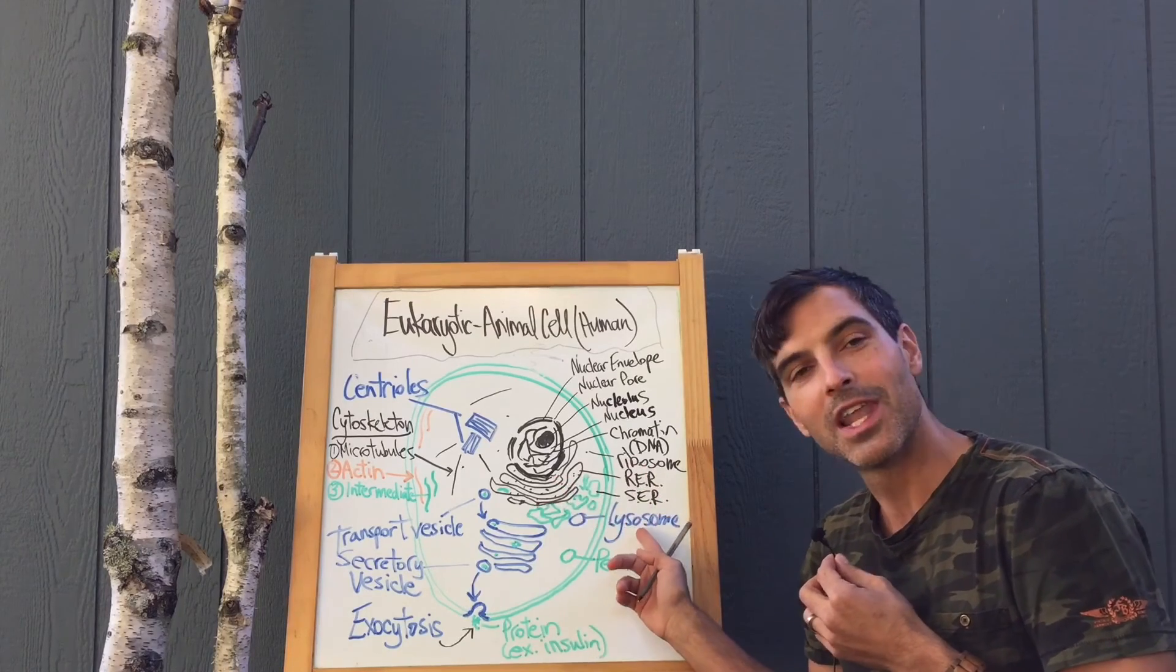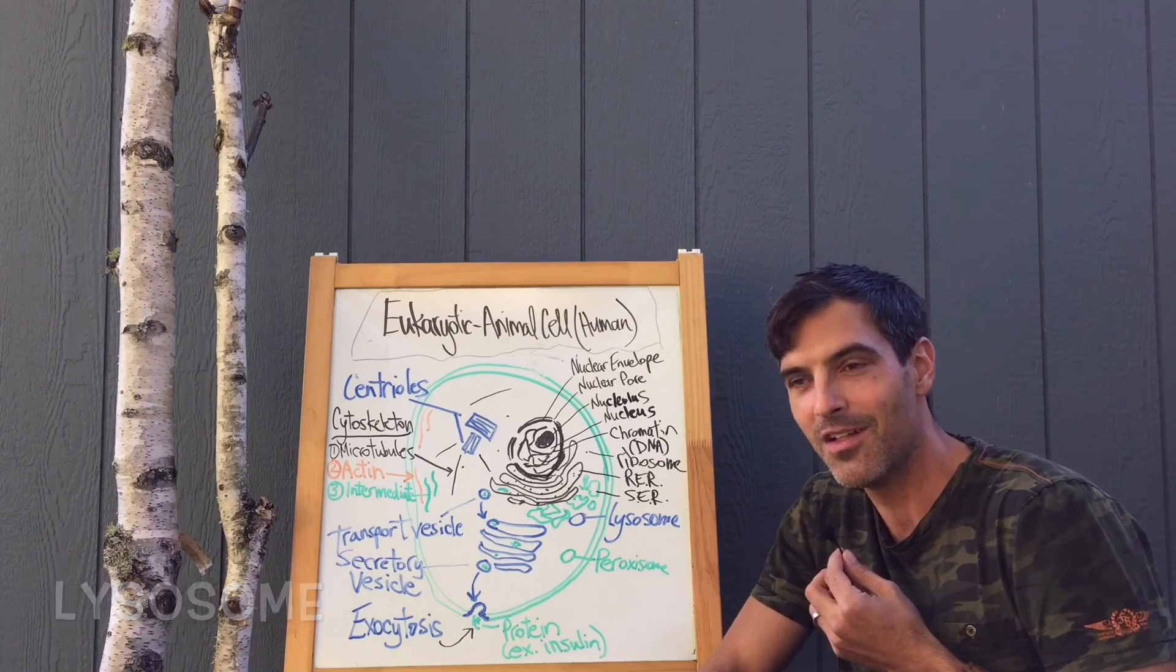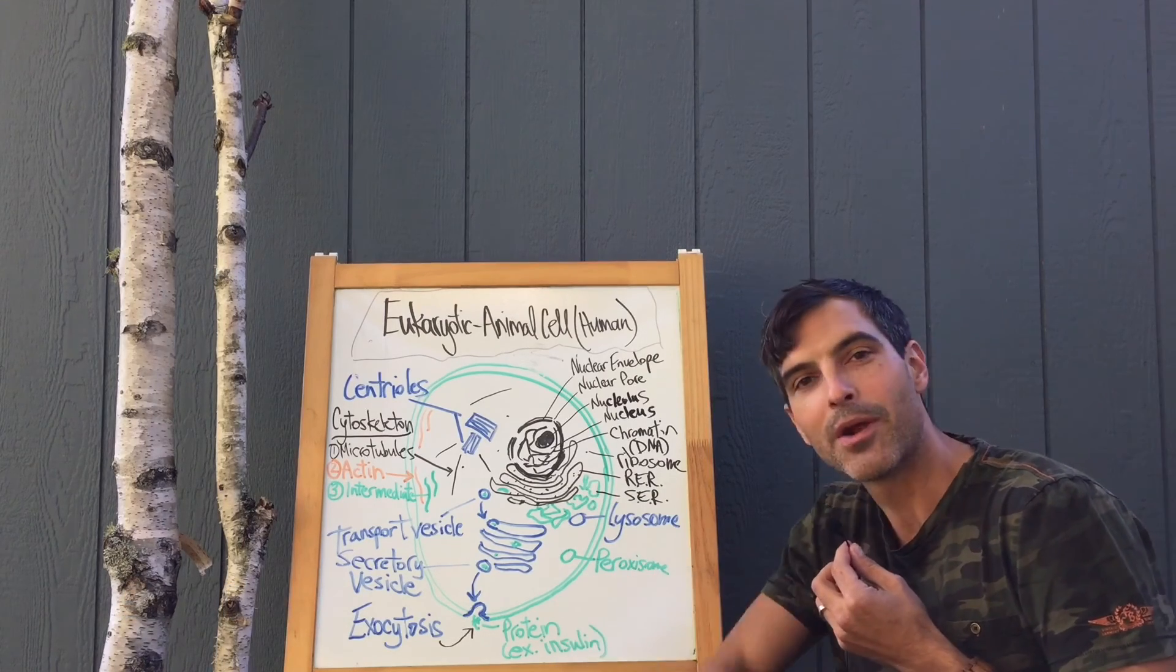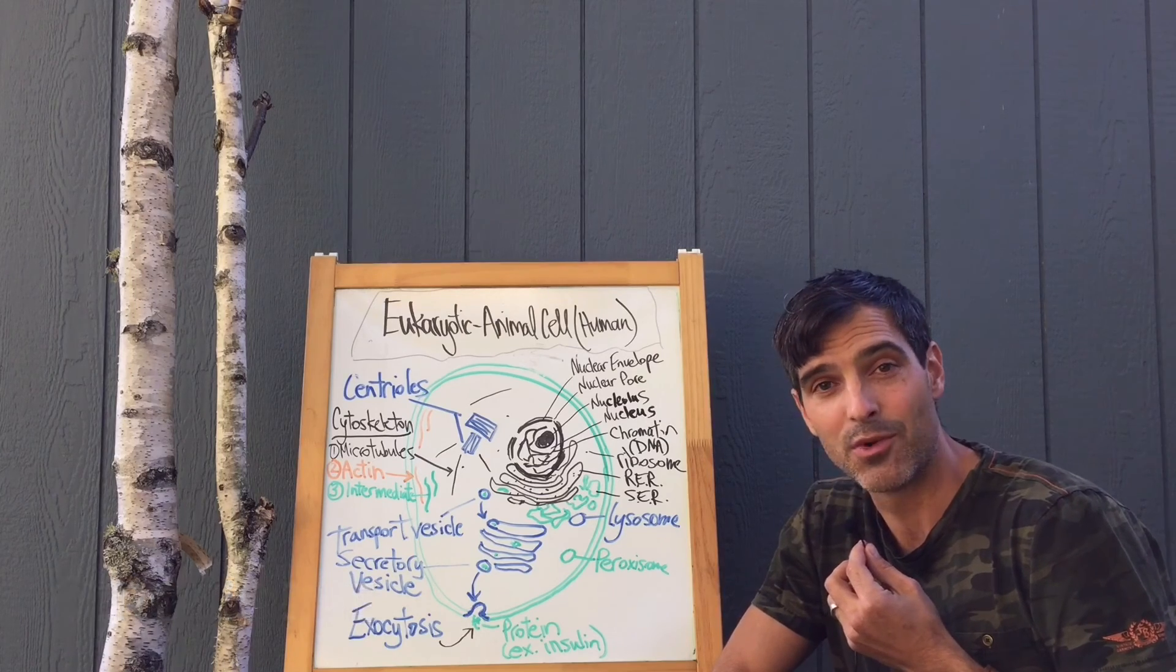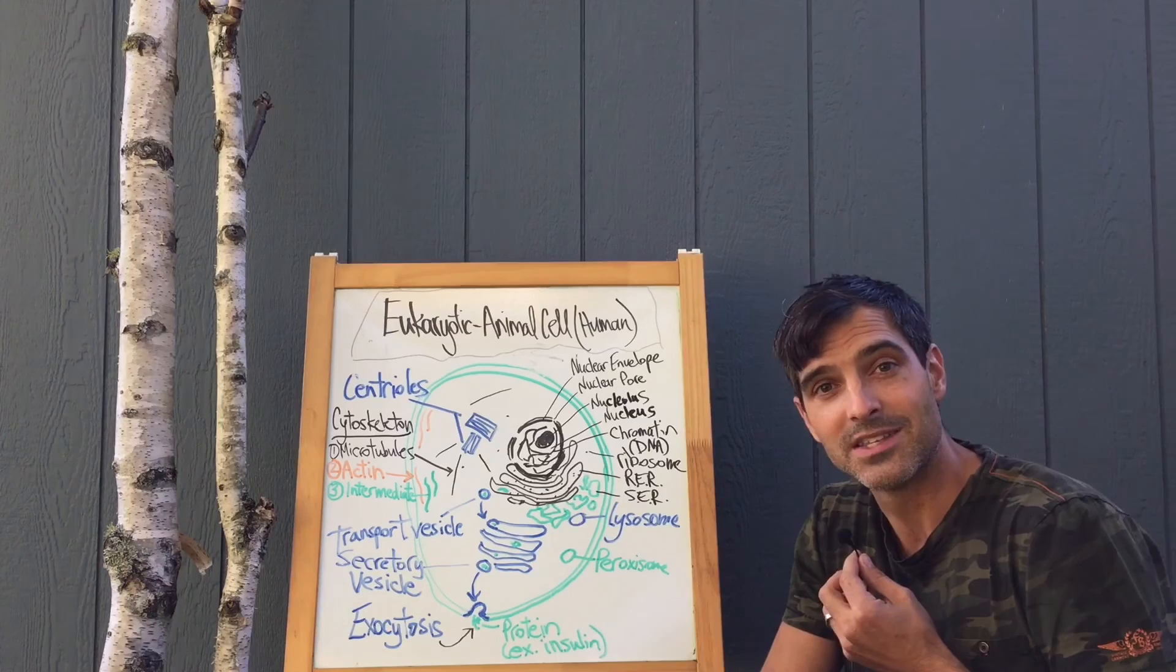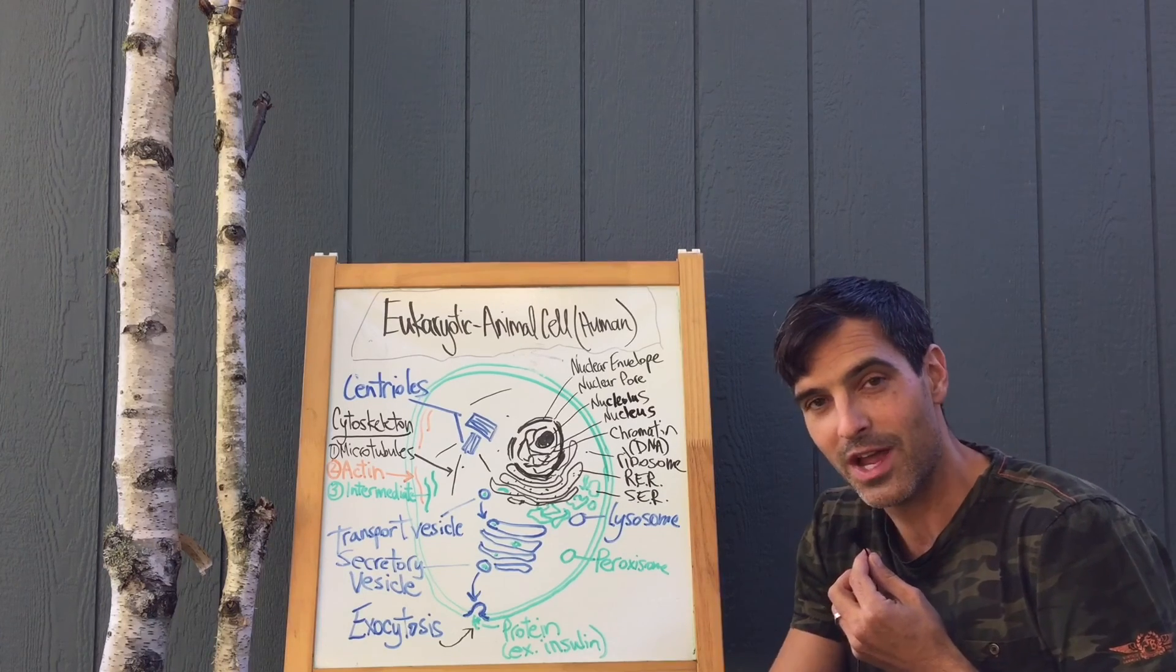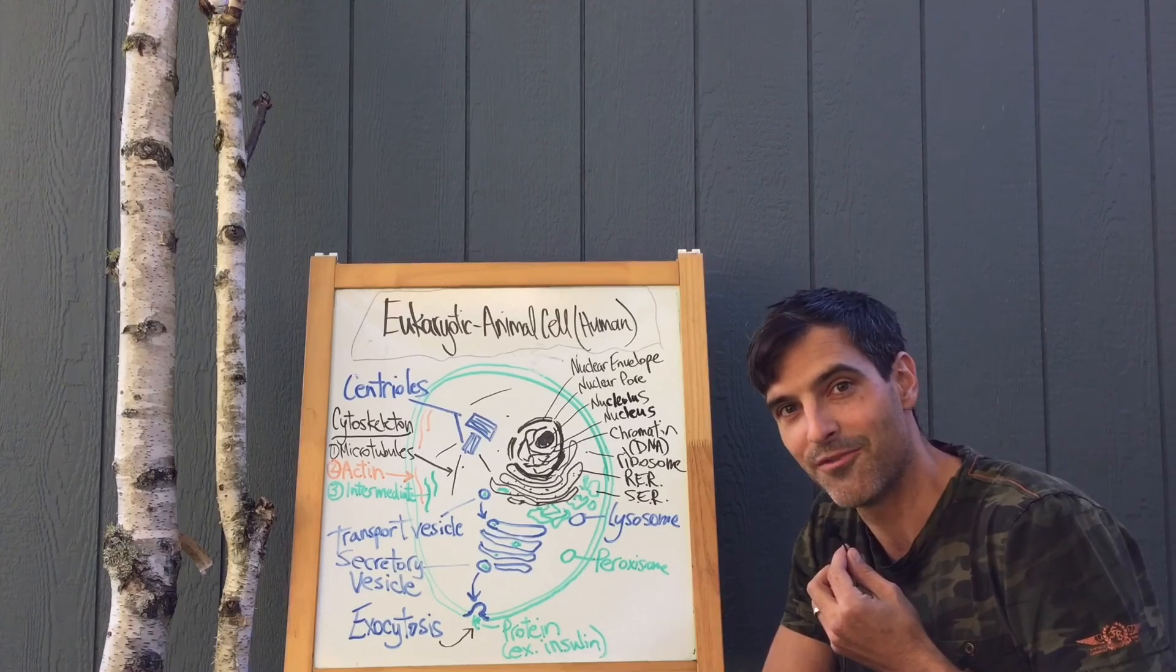We also have the lysosome here, which is the garbage and recycling area of the cell. And we have the peroxisome, which hydrolyzes lipids. In other words, it takes water to break up lipids, and it has digestive enzymes in it. You'll find a lot of those in the liver where we metabolize our fats.